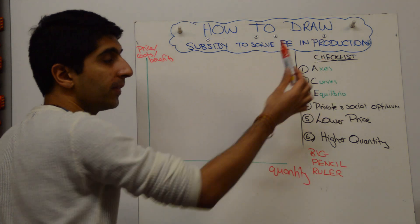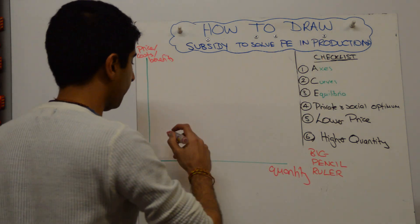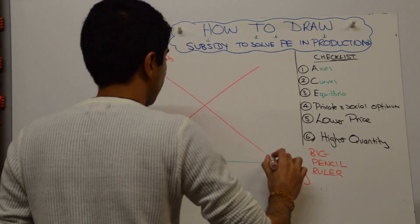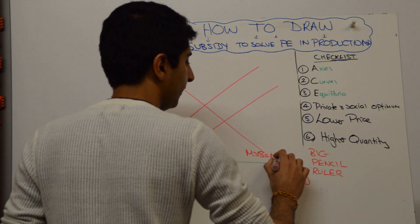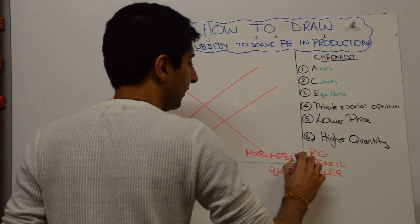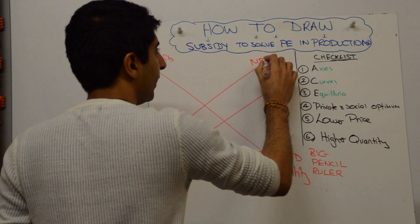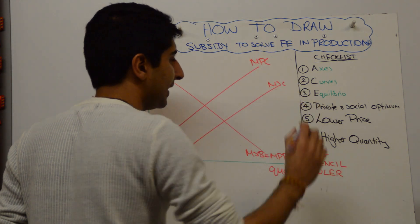Then we start by drawing the positive externality production diagram, which looks like this. There is no issue with benefits. So MSB is equal to MPB equal to D. We have MPC over there, and we have MSC like that.